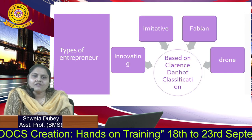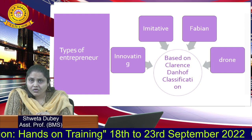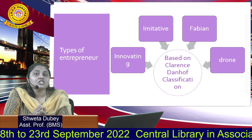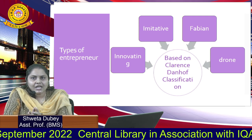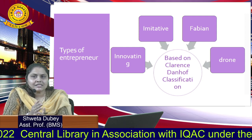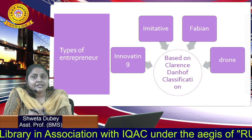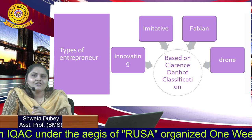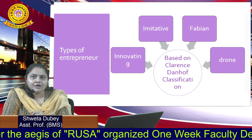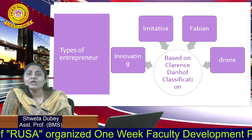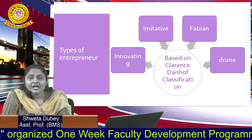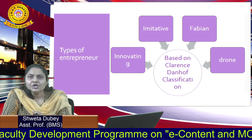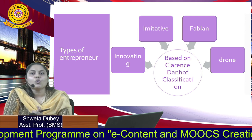Next, we have the classification given by Clarence Danhoff, who classifies entrepreneurs on the basis of the economic stages of development. He states that at the initial level there is a lot of learning to do, and slowly and steadily there are advancements in the type of entrepreneurs. The very first one is the innovative entrepreneur — this is Schumpeter's innovation entrepreneur — someone who will innovate, create a process, create an idea, create a product or a service. Such a person comes up with something new and different which will reform the way society functions.